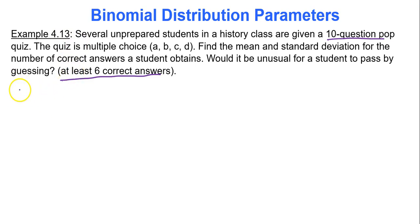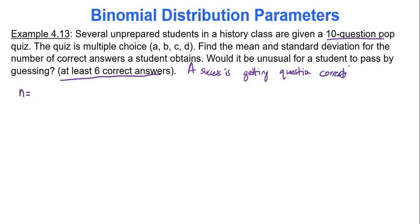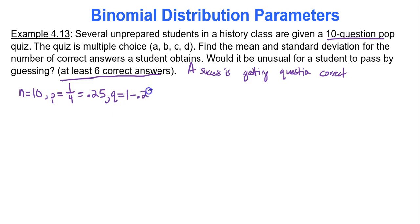A student goes in to take the test. A success is getting a question correct. I have 10 questions, so n equals 10 trials. The probability a student gets a question correct when there are 4 answer choices is 1 out of 4, which is 0.25. And q — the probability of a failure — is 1 minus p, which is 1 minus 0.25, giving 0.75.